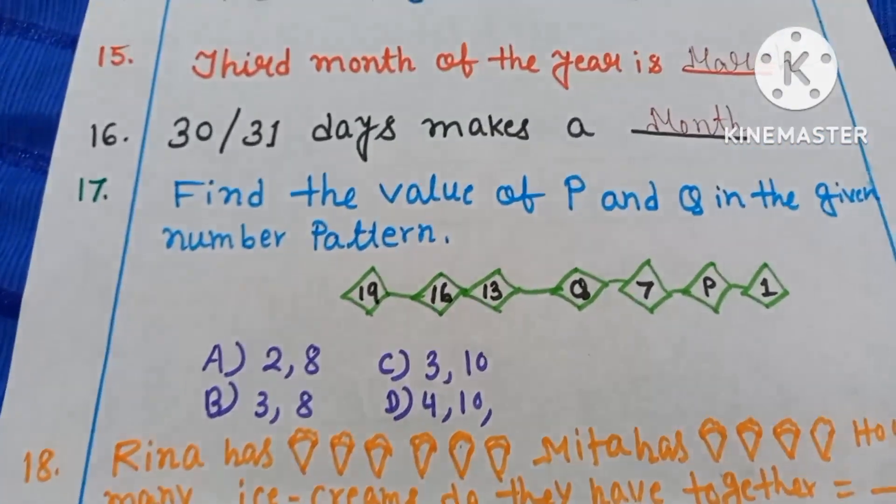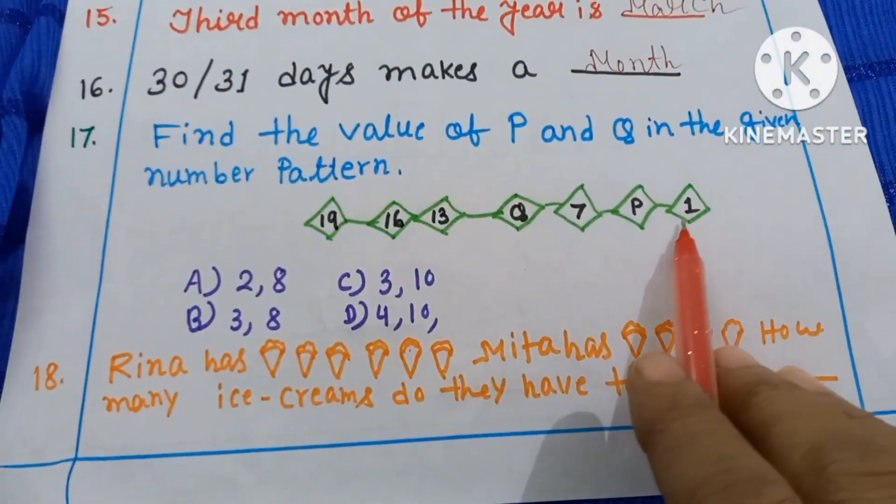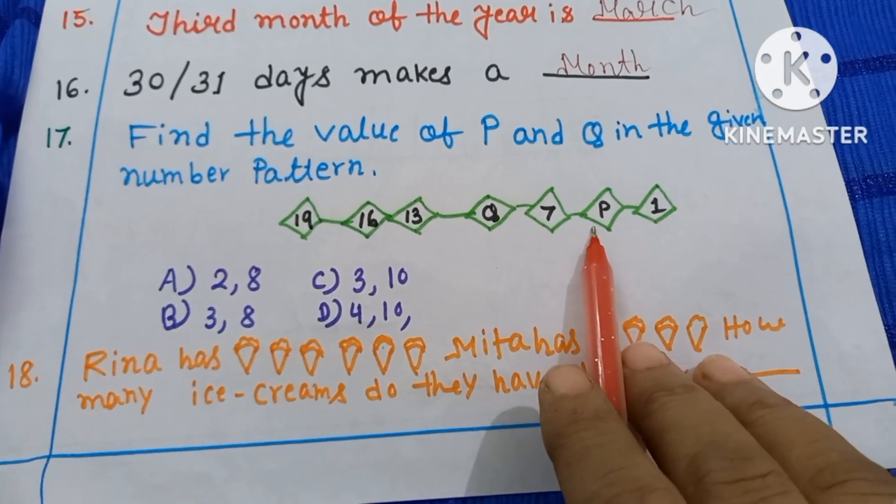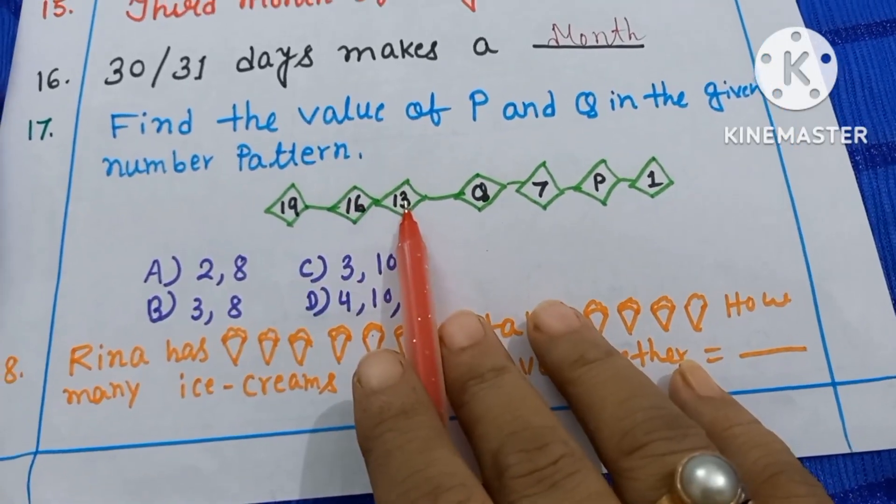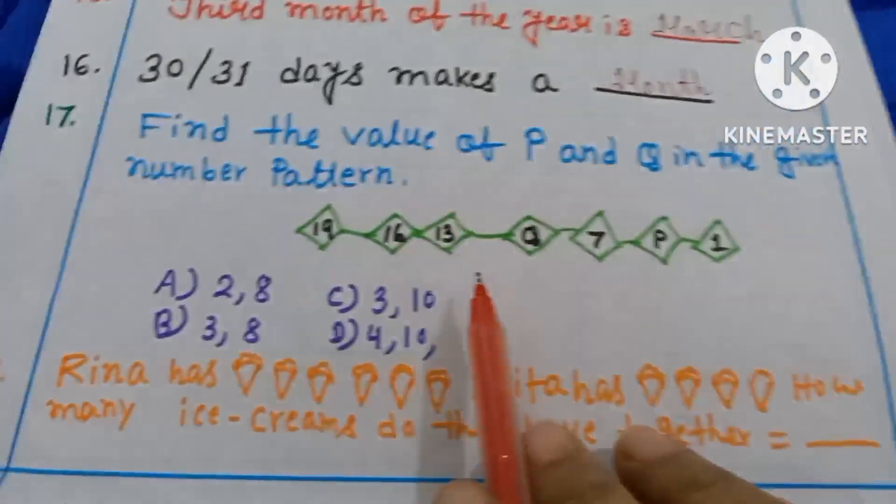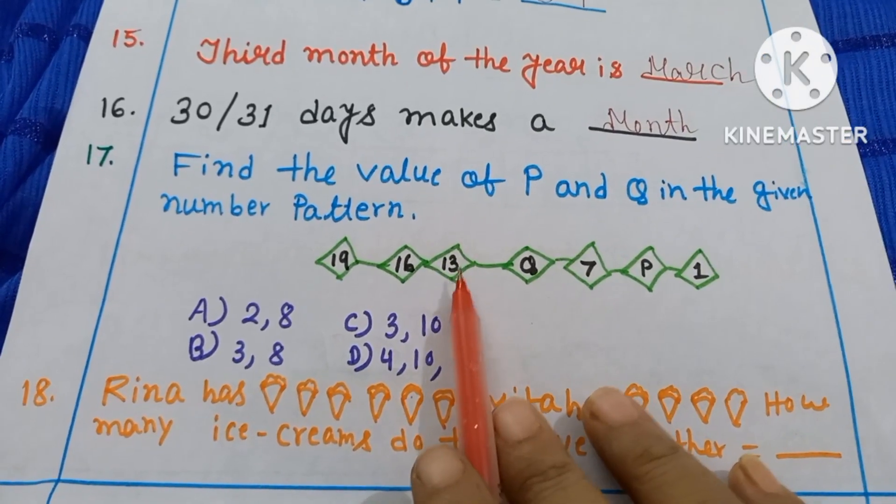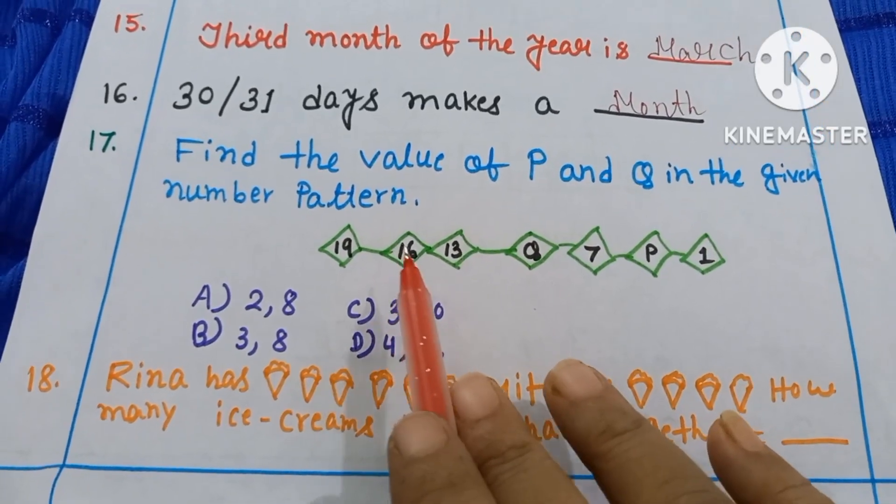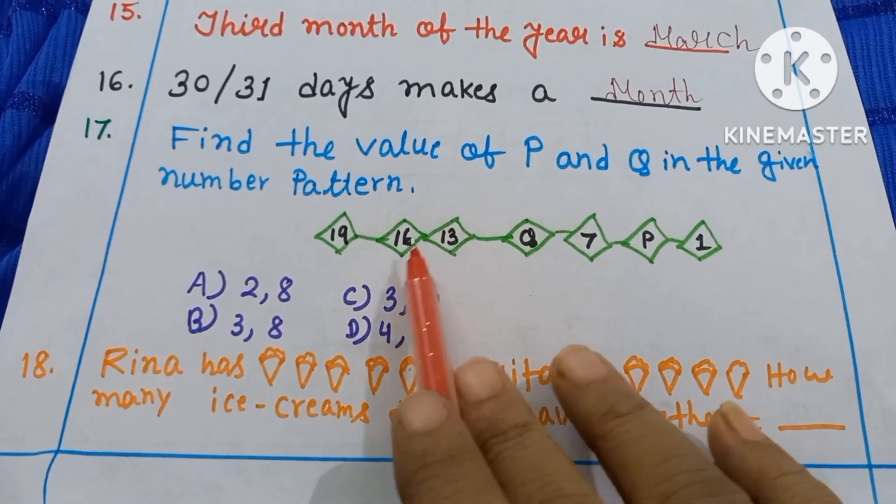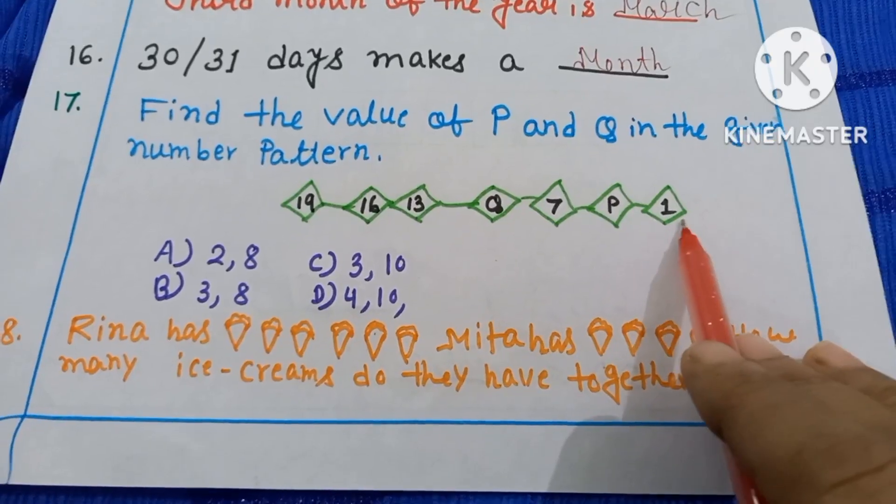Question 16. Find the value of P and Q in the number pattern. You can see from here you have to start 1 then P, 7 then Q, then 13, 16 and 19. Now I am going to discuss with you from here. If you add 3 with 13 you will get 16. If you add 3 with 16 you will get 19. That means you have to add 3 with the given numbers.